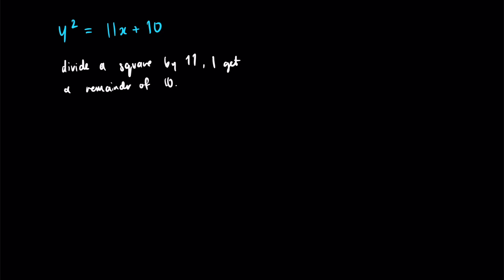The reason I state it like that is because it sort of leads into the exploration of dividing square numbers by 11. I want to look at the remainders I get when I divide square numbers by 11. So I'm going to draw up a table.